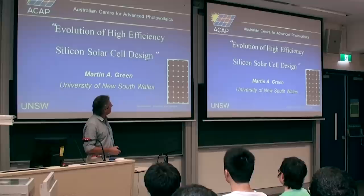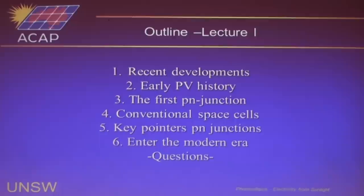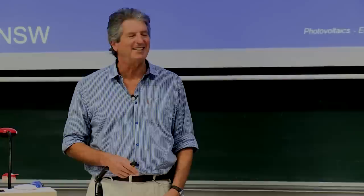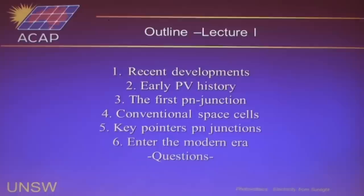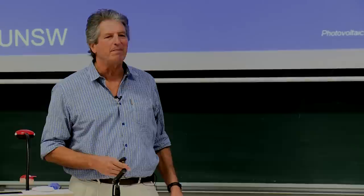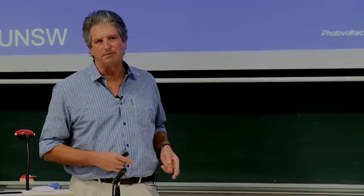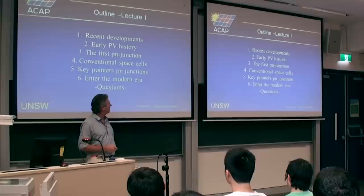This is the outline of the lecture. I'm going to give a little bit of an overview of things that have happened since I gave the lecture last year, then a little bit of the early history, talk about P-N junction space cells, give a couple of key issues with P-N junctions, and then give the early parts of the modern era, and then take a break with time for questions.